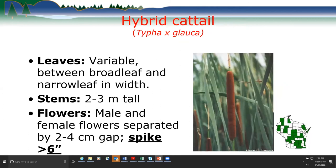Typha x glauca, the hybrid cattail, has leaf width that is variable — somewhere between broad-leaf and narrow-leaf — making it an unreliable characteristic. Stems grow 2 to 3 meters tall. The male and female flowers are separated by a 2 to 4 centimeter gap, similar to narrowleaf cattail. The pistillate spike is greater than 6 inches tall, making it slightly taller than the narrowleaf cattail's flower spike.